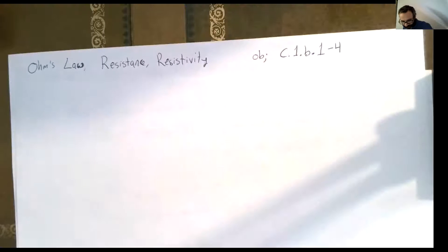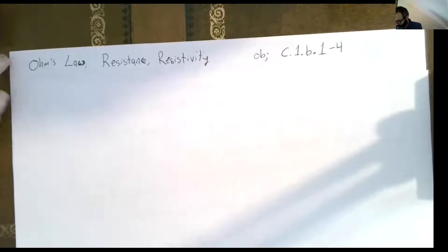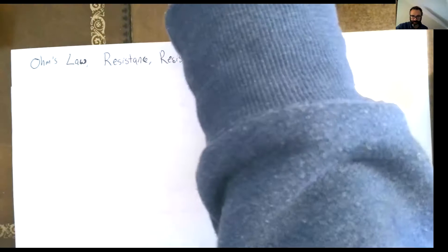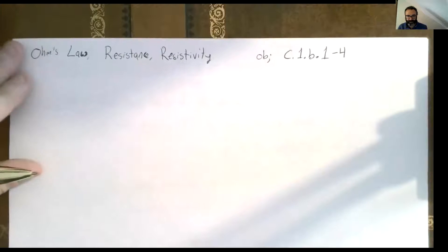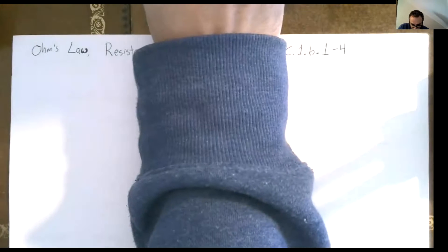We're continuing from our lecture last time on current and current density. This time we're going to find the definition of resistance — resistors are in every electrical circuit, so we need to know about resistance and resistivity. We'll also be starting with Ohm's law today, and what it isn't. The objectives in this lecture are C.1.B one through four.